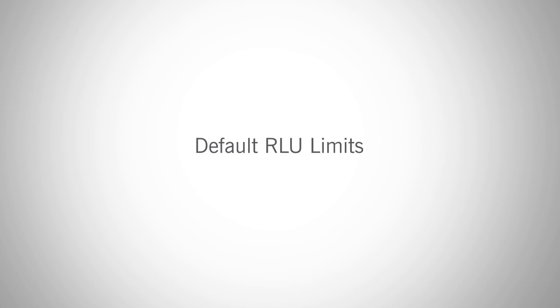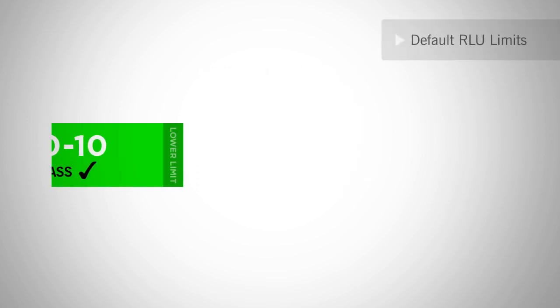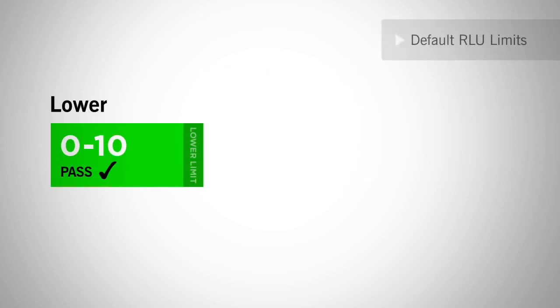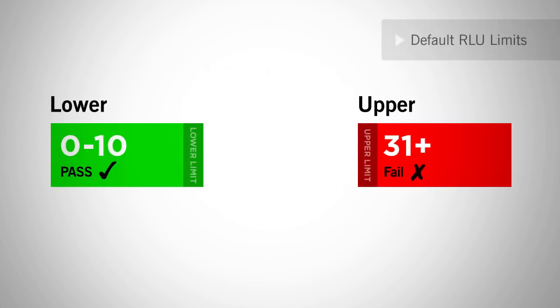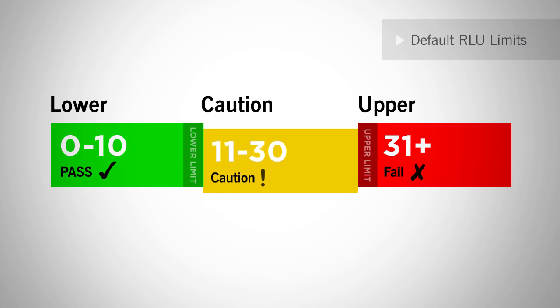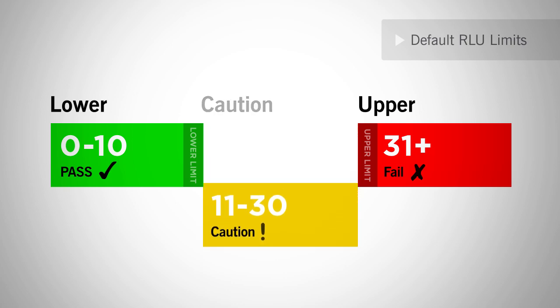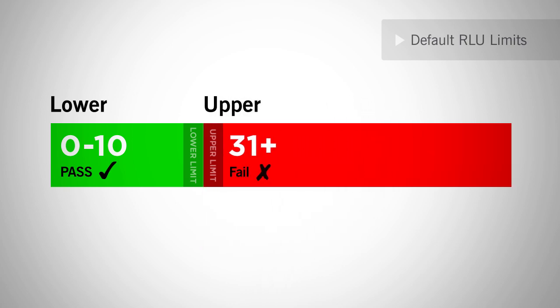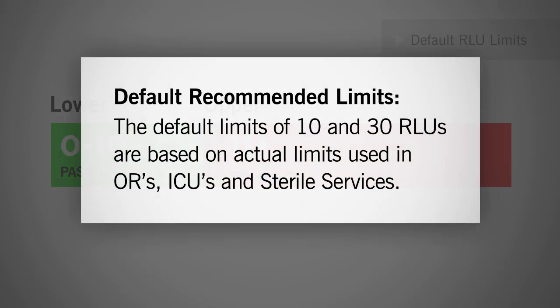Your meter comes preset with the default lower limit of 10 and an upper limit of 30. This creates a caution area of 11 to 30. If you wish to eliminate the caution area, set 10 as your pass limit and 10 as your fail limit. The default limits of 10 and 30 RLUs are based on actual limits used in ORs, ICUs, and sterile services.